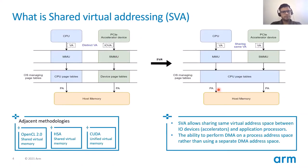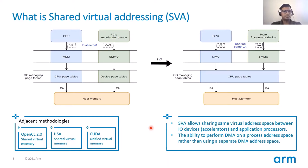So what is Shared Virtual Addressing? SVA is a technique that allows sharing the same virtual address space between the CPU and IO device. Both CPU and IO device work on the same virtual address pointer and can access the same physical memory. SVA provides the accelerator device the ability to perform DMA on the process address space rather than using a separate DMA buffer.